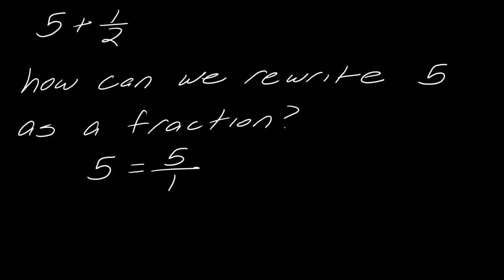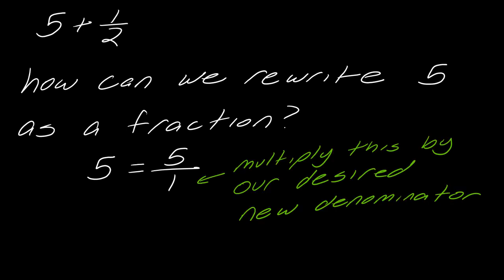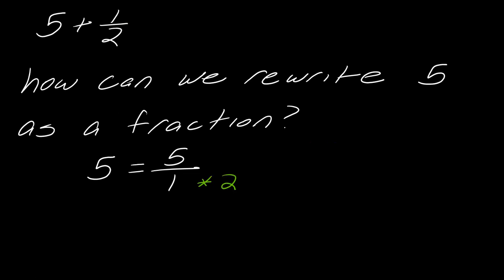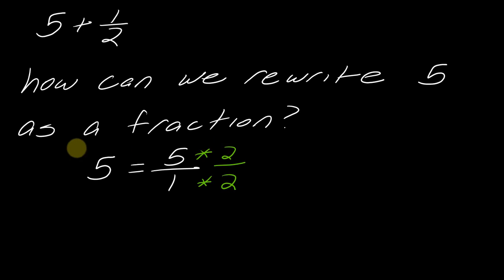How can we rewrite five as a fraction? You're just going to write five as five over one. We want to multiply the one in the denominator by our desired new denominator — but if we're going to do that, whatever we multiply by the bottom we also have to multiply by the top. So I want to have a denominator of two, meaning I multiply by two over two. Think about what's actually happening: two over two equals one, so we're effectively just multiplying by one, but more strategically. By multiplying the same thing on top and bottom, you don't change the actual original value of the number.